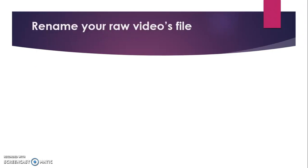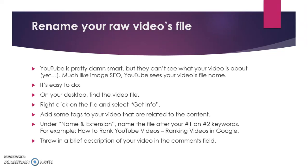We will discuss renaming your raw video file. YouTube is very smart but they can't see what your video is about. Much like image SEO, YouTube sees your video file name. On your desktop, find the video file, then right-click and select Get Info. Add some tags related to your content, and under the name and extension, name the file after your number one or number two keywords — for example, 'how to rank YouTube videos' or 'ranking videos in Google'.